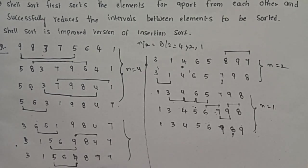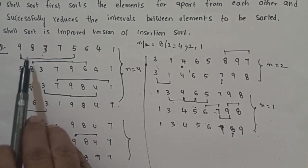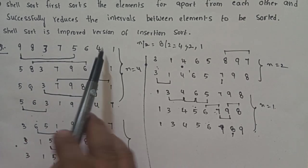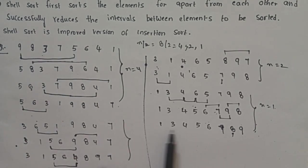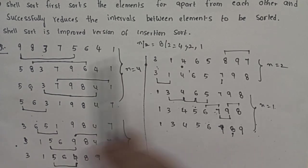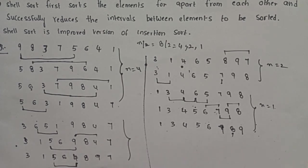Input array: 9, 8, 3, 7, 5, 6, 4, 1. After sorting, the complete sorted array is: 1, 3, 4, 5, 6, 7, 8, 9. By taking the intervals and reducing the number of comparisons, sorting is completed. This is shell sort.